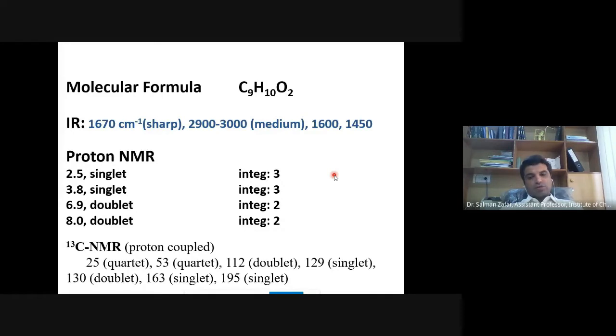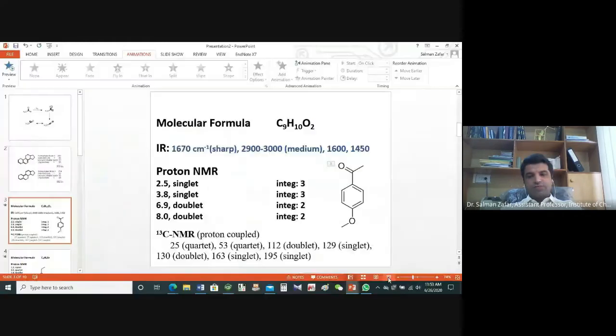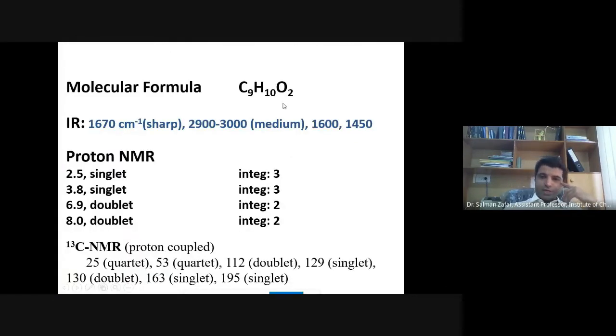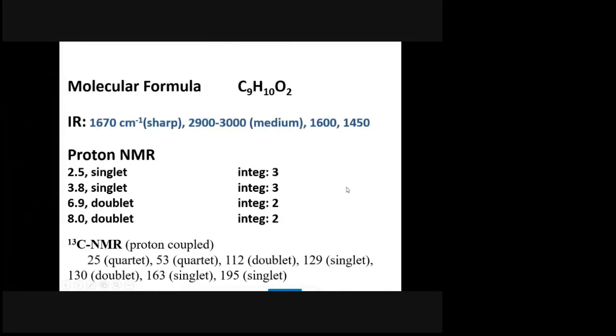Remember, never jump on to the structure directly. Go step by step, starting with the molecular formula. Extract as much information as you can from each of the data given. So from the molecular formula we calculate the IHD, that is 5 times 9 minus 10 plus 2 divided by 2, which is equal to 5.